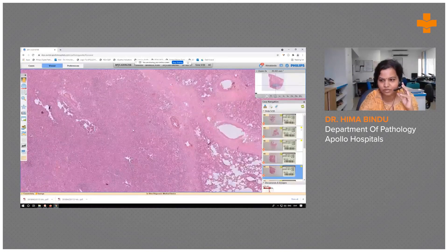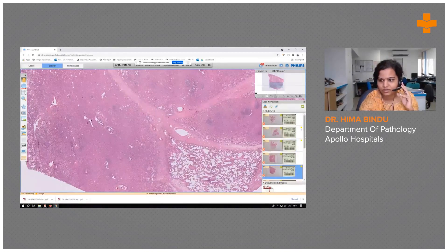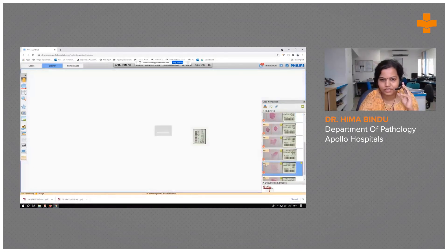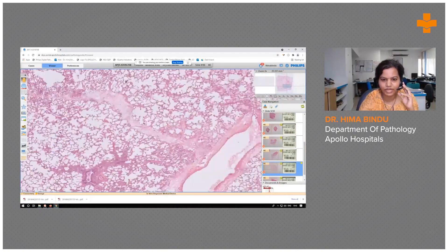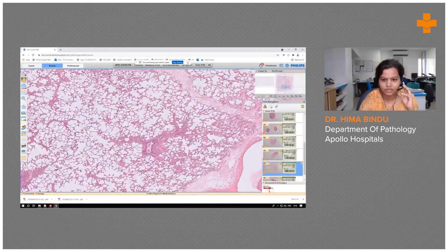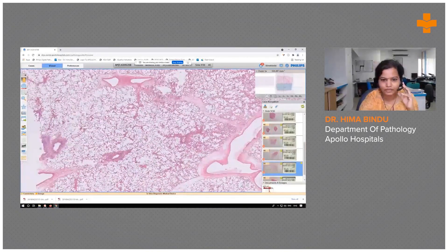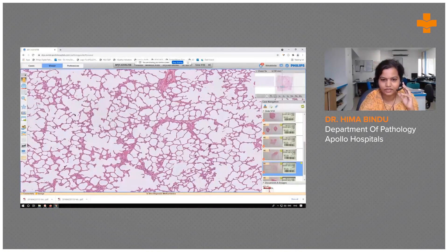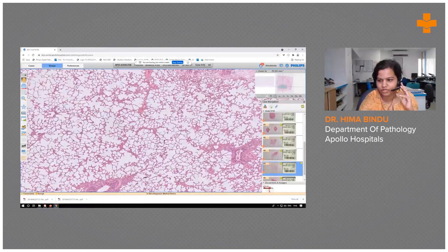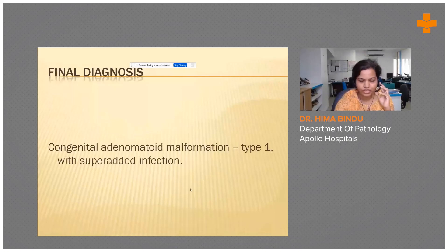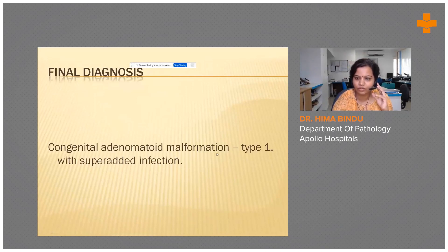There was superadded infection adjacent to the cyst. Sections away from the cyst showed near-normal lung parenchyma. You can appreciate the terminal bronchioles with the pulmonary arteries and normal-appearing alveoli with no significant inflammation or fibrosis. Based on these features, the diagnosis was congenital adenomatoid malformation Type 1 with superadded infection.